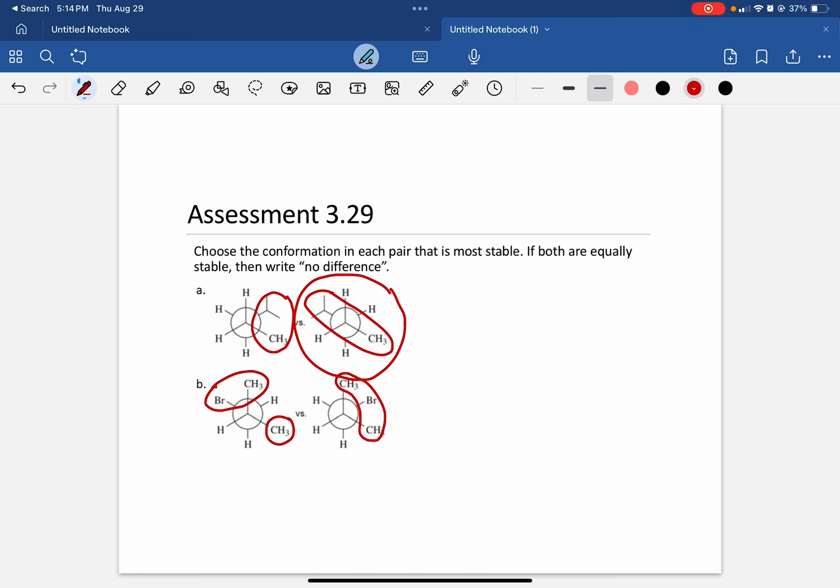And so both of these are going to be examples of the gauche conformation, because both of the CH3s, the largest groups, are not anti from one another in either one of these.